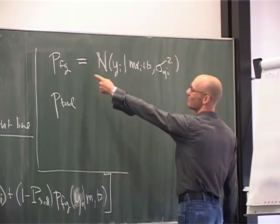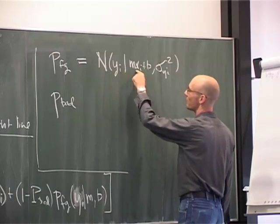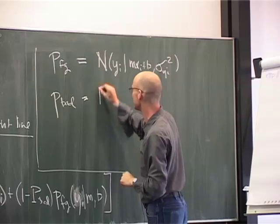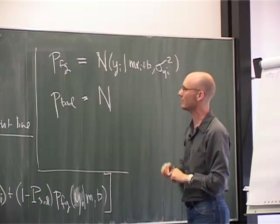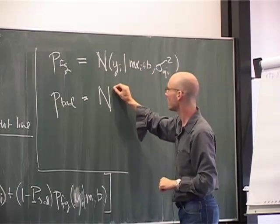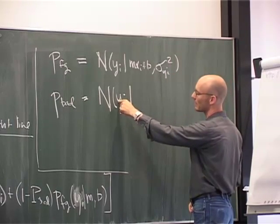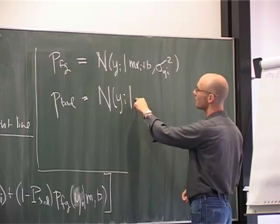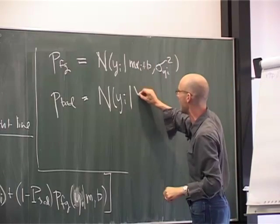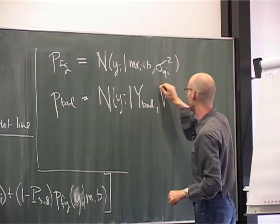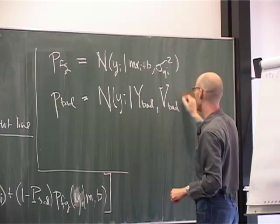Good, so the foreground model is that each data point is drawn from this line with this variance. And for the background model, I'm just going to assume it's also a Gaussian where the probability of getting this data point is drawn from something that has nothing to do with the line, just some mean and some variance that I don't care about.